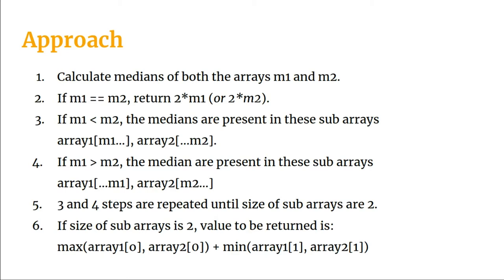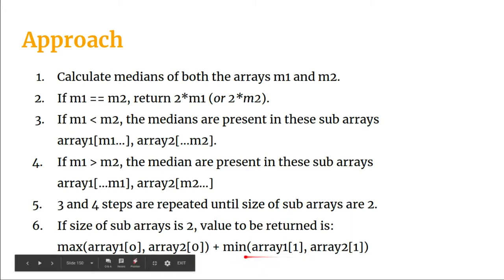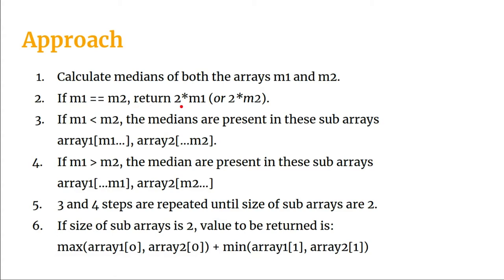We also handle some basic constraints: if the size of the arrays is zero, we return nothing meaningful. If the size is one, the only element is the median, so we return the sum of both single elements. If the size is two, we handle it with a special statement. Otherwise, if m1 < m2, the medians will be present in two sub-arrays: array one from the middle element to the last, and array two from the start to the middle element.